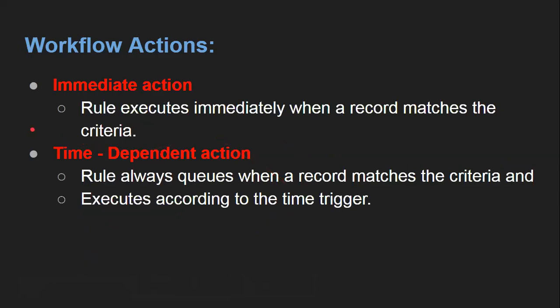After understanding evaluation criteria and rule criteria, the next thing is action. There are two actions that workflow rules provide. First is immediate action — the rule executes immediately when a record matches the criteria, so you can define actions to run right away under immediate action. Second is time-dependent action — if you want to execute a particular action at a particular time, you can implement them under time-dependent action. The rule always queues when a record matches the criteria and executes according to the time trigger. You can set a particular time bound for when your action will be executed, and you can choose either immediate or time-dependent action as per your requirement.